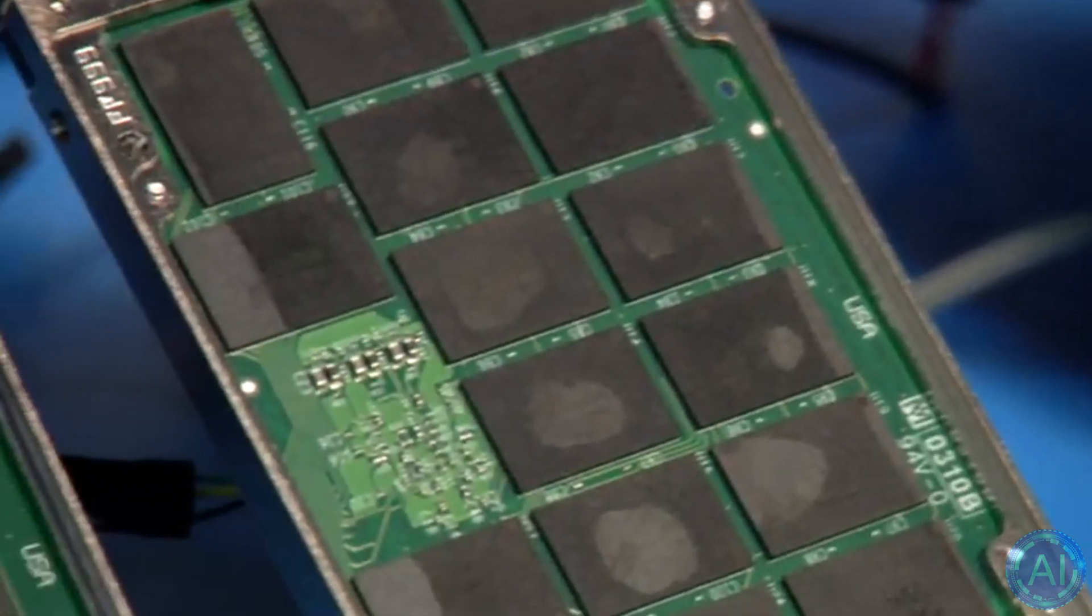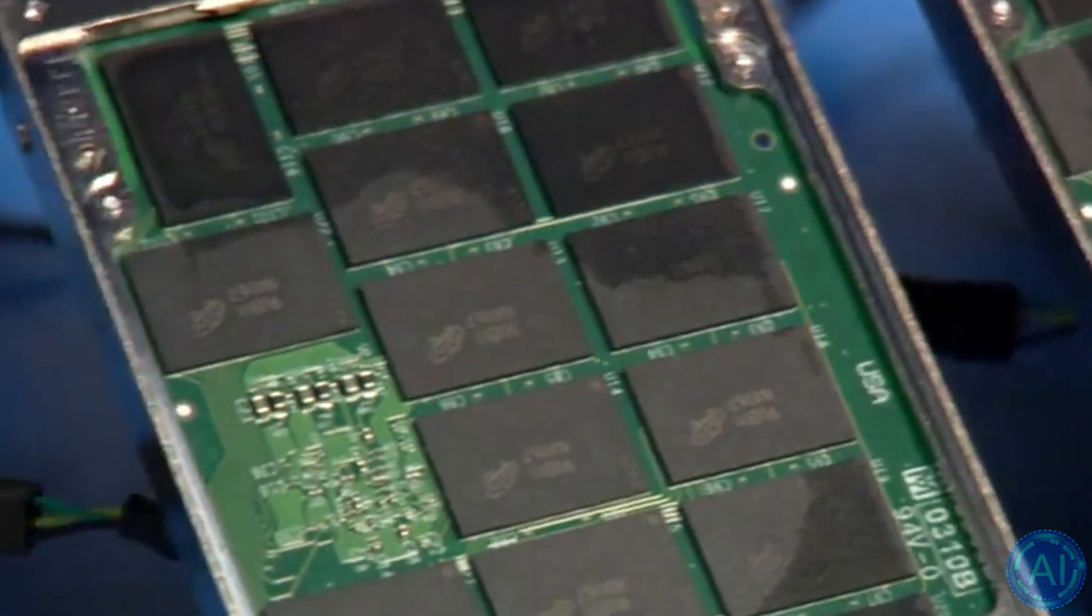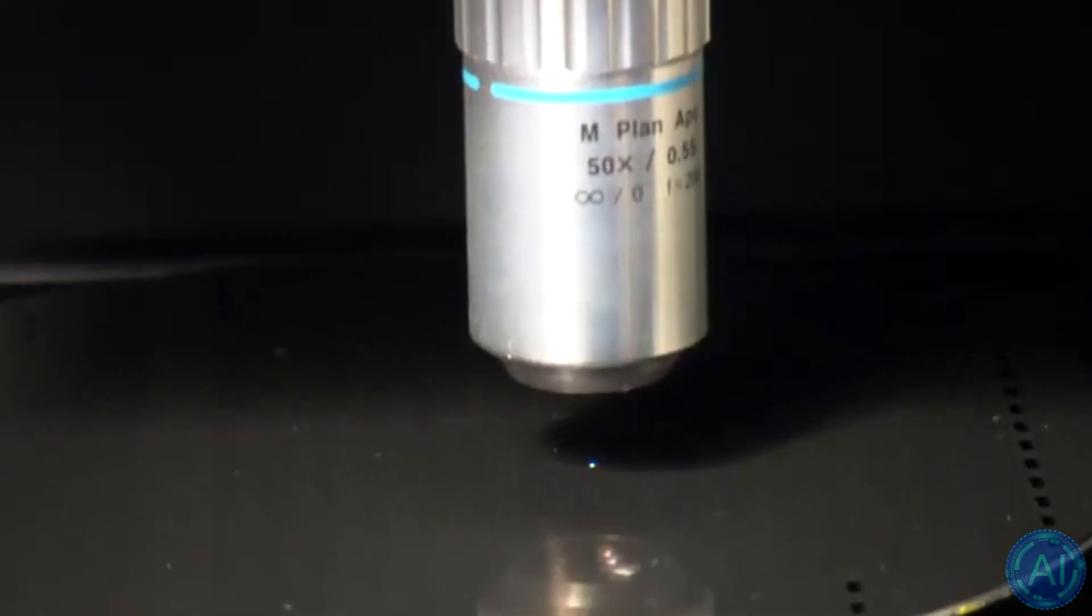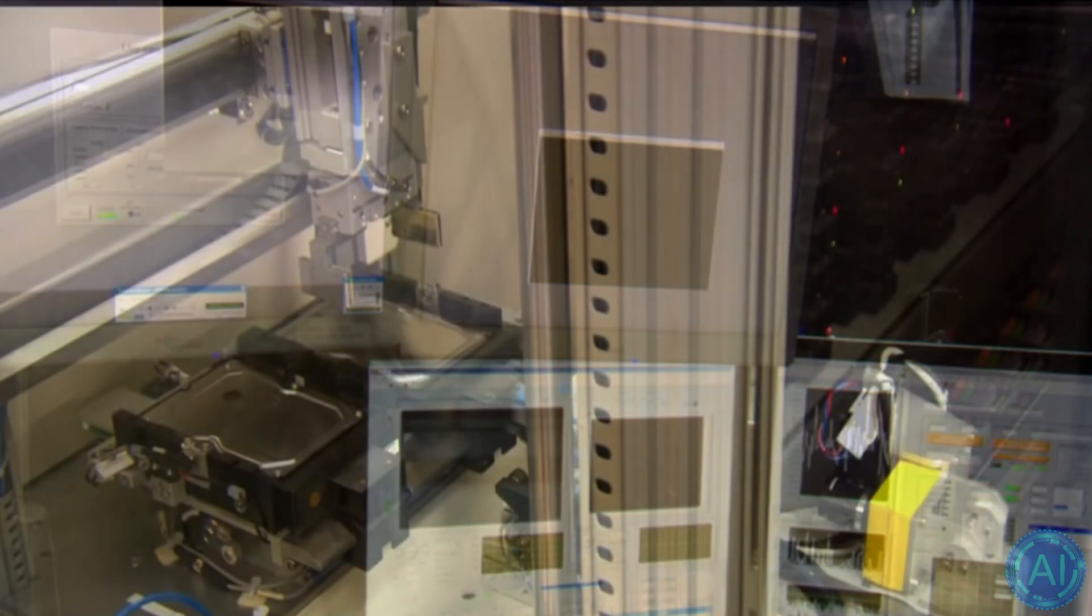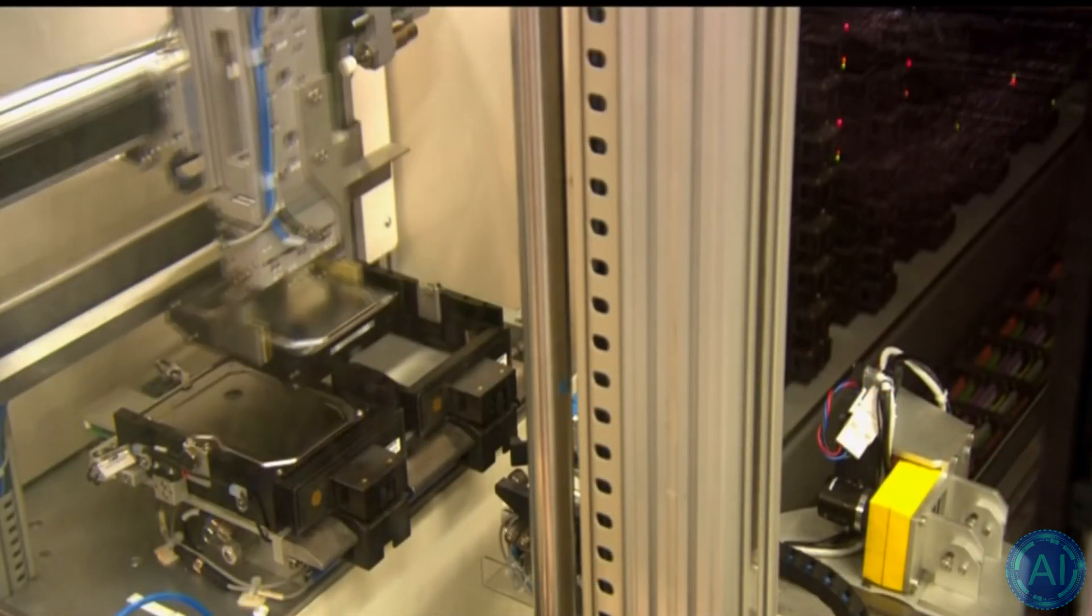Seagate was the first HDD manufacturer to offer its multi-actuator technology in late 2017, and it began sampling such drives, which have been branded as Exos Mach 2, with select clients in early 2019.